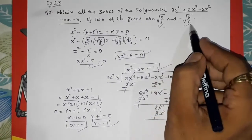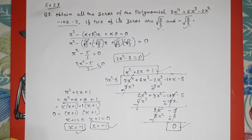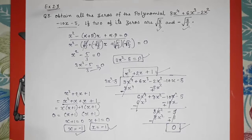These are the other two zeros, and two zeros were this. So total four zeros. Now we have found out all the zeros. Thank you so much for watching my video. If you like it please subscribe to my channel. Thank you so much.